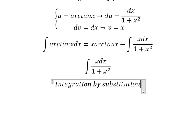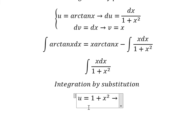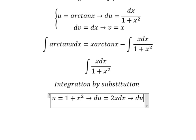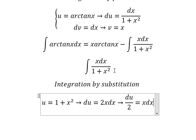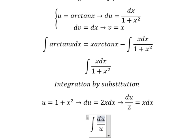We need to use integration by substitution. I will let u equals one plus x squared. Then we take the first derivative of both sides, and we have 2x dx. Since we don't have the number 2 here, we divide both sides by 2, so x dx equals du over 2.